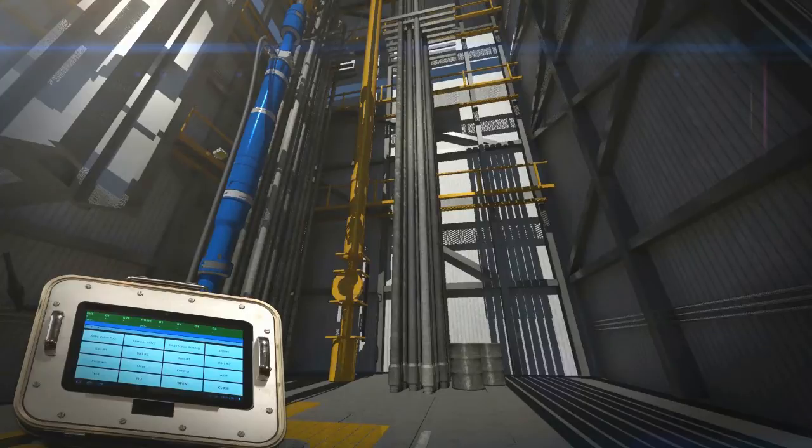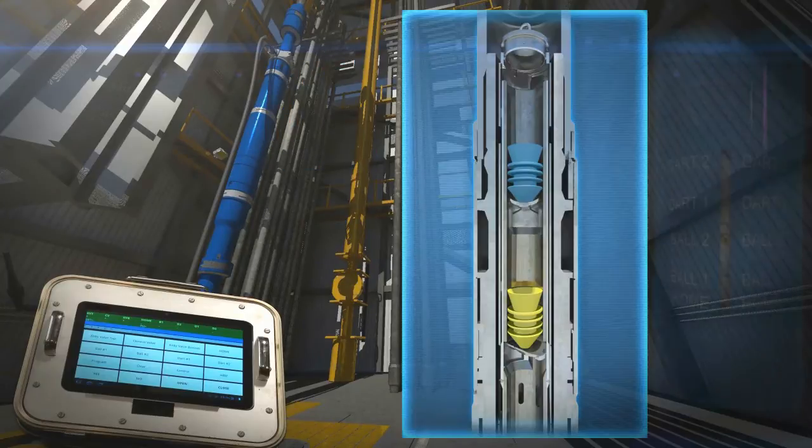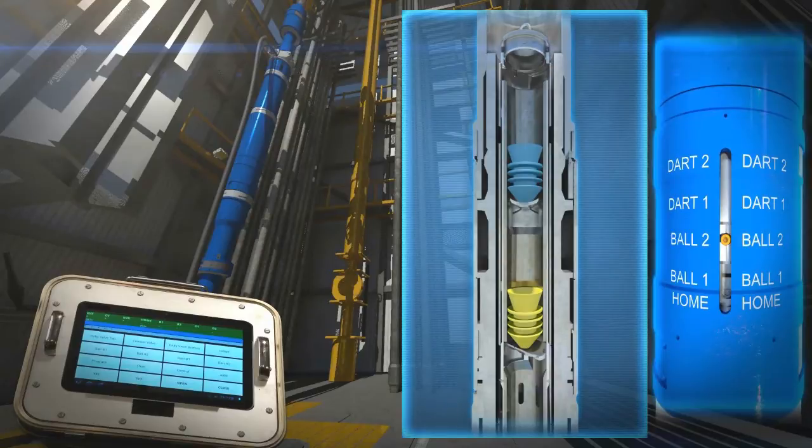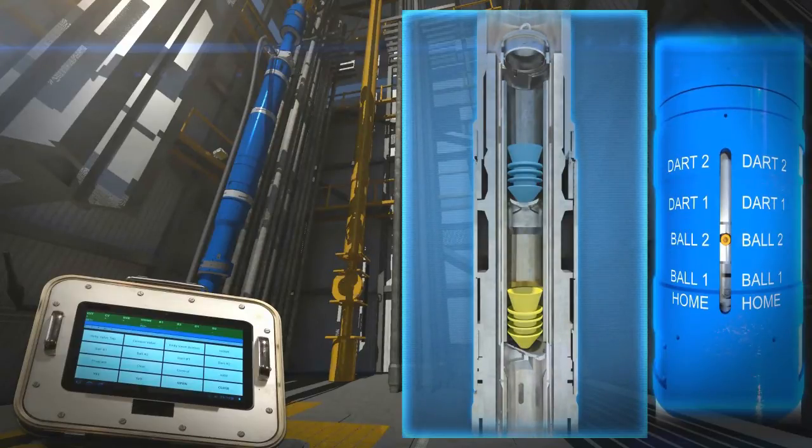Next is the plug launching sequence. Before plugs are launched, a flow-around cage prevents potential damage that can be caused by having the plugs directly in the flow path before and during cementing.